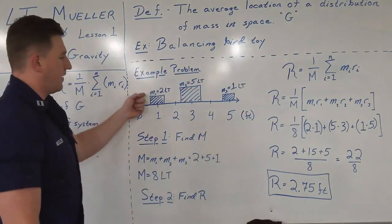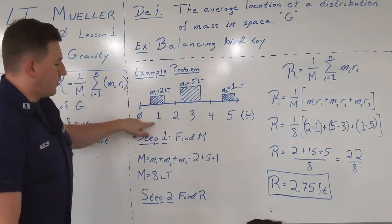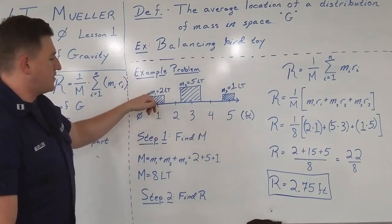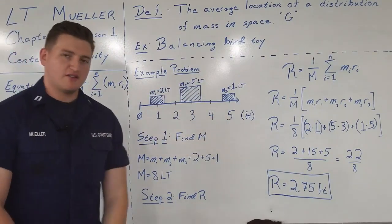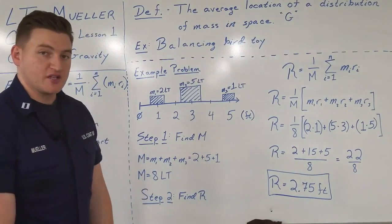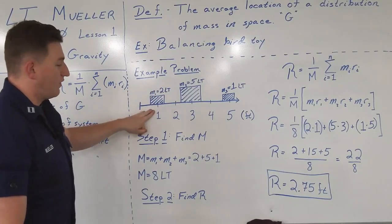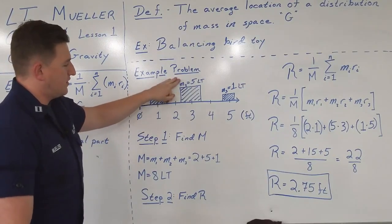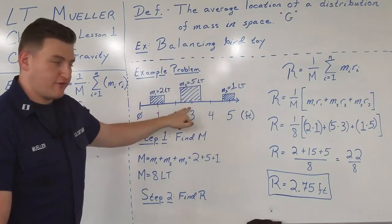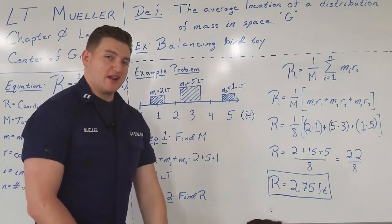So in our example problem, we've defined the system as three different masses. We have a coordinate system down here that's in feet, and then we have three masses, each in long tons. Long tons is a very common system of measurement when it comes to naval architecture and ship stability. We have our first mass of two long tons located at one foot. Our second piece of the system, M2 is five long tons, and that's at a coordinate of three feet. As well as at five feet, we have one long ton, which pertains to mass number three.